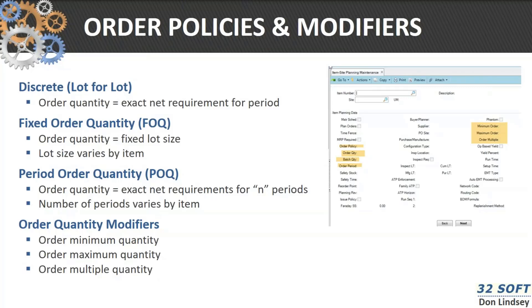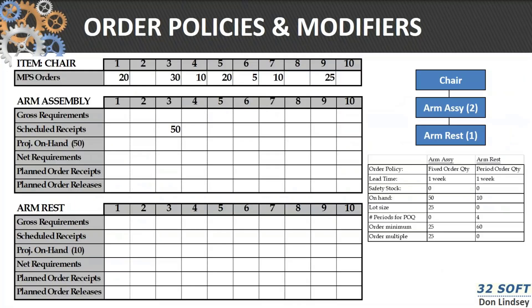There are some order modifiers that exist in QAD. Here's a picture of the planning data we'll talk about: the discrete lot size, the fixed order quantity, EOQ (which we talked about last week), the period order quantity, and then a whole series of other order modifiers. In this example, we have an armrest and an arm assembly with a lead time of one week, on-hand of 50 and 10, a lot size of 25, a period order quantity of 4, and a minimum order quantity of 25 and 60.